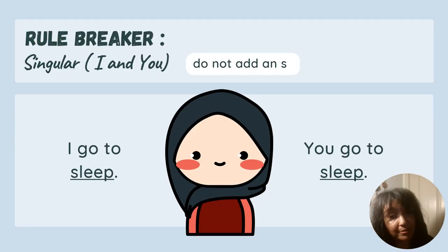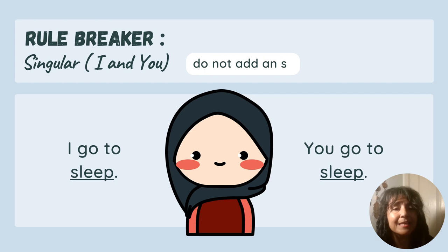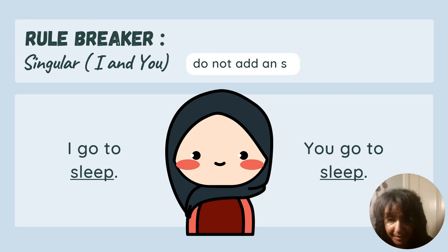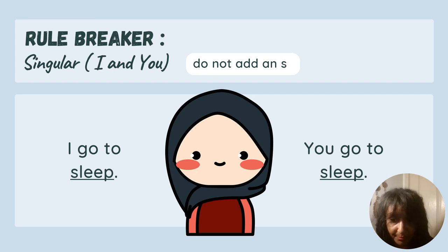Now here is a rule breaker: singular subjects like 'I' or 'you.' We do not add an S. 'I go to sleep.' 'You go to sleep.'